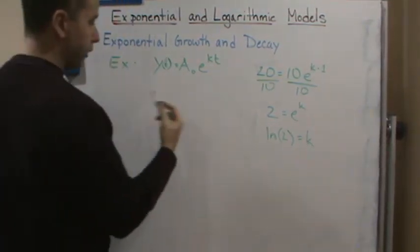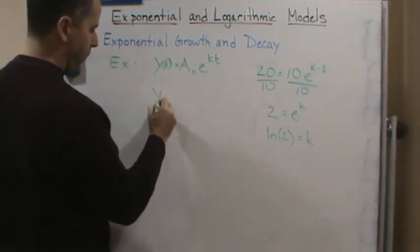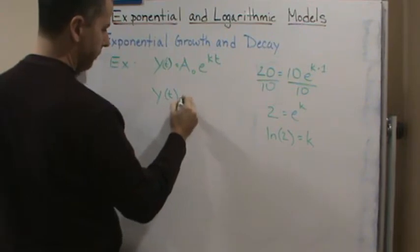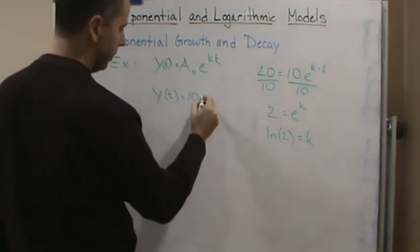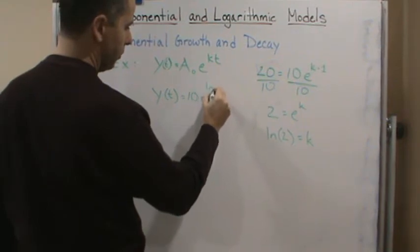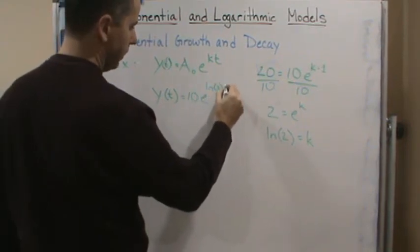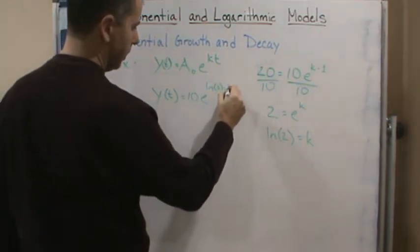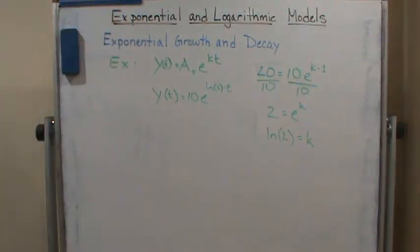So now I have my final formula: y of t equals 10 e to the natural log of 2 times t. Now how does this help me graph this?